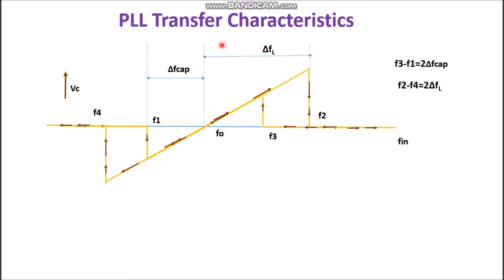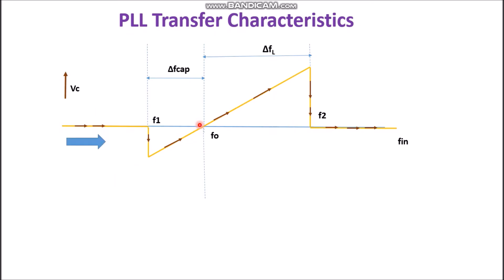When we see this PLL transfer characteristic in totality, it may be somewhat difficult to understand. So let us understand it one by one — when the frequency is gradually increased and when it is gradually decreased. The y-axis is error voltage and the x-axis is input frequency, indicating that we are gradually increasing the frequency. Before F1, the VCO is running at its free running frequency only, and the loop does not respond to the signal until it reaches frequency F1.